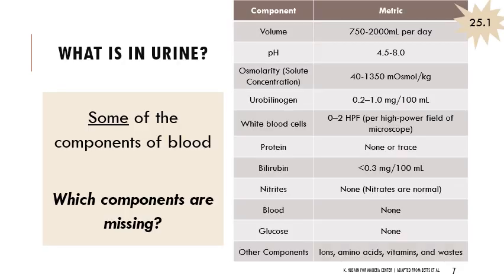Urine can range quite a bit in volume per day. Its pH ranges from 4.5 to 8. It has many solutes, urobilinogen, and sometimes white blood cells but certainly not red blood cells. It should not have glucose, should not have nitrites — nitrites are symptomatic of bacteria, though nitrates are normal. It should not have large proteins and has low bilirubin, which contributes to color. It does have ions, amino acids, vitamins, and waste products found in blood — similar to blood but missing components like red blood cells.